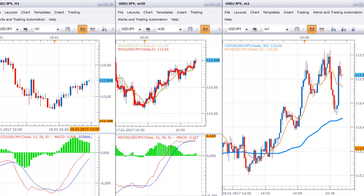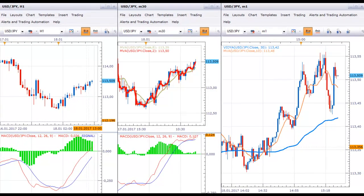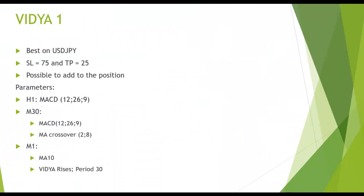In the next video I'll show you how to trigger the trades. To summarize the parameters: on H1 use the standard MACD; on M30 use the standard MACD plus two simple moving averages with periods of 2 and 8; and on the M1 chart use a simple moving average with period 10 plus the VDA on period 30. The key rule is that the VDA needs to be rising to enter a trade. This strategy works best on USDJPY, with a stop loss of 75 pips and take profit of 25 pips. It's also possible to add to the position, but don't forget to reverse if there is an opposite signal.